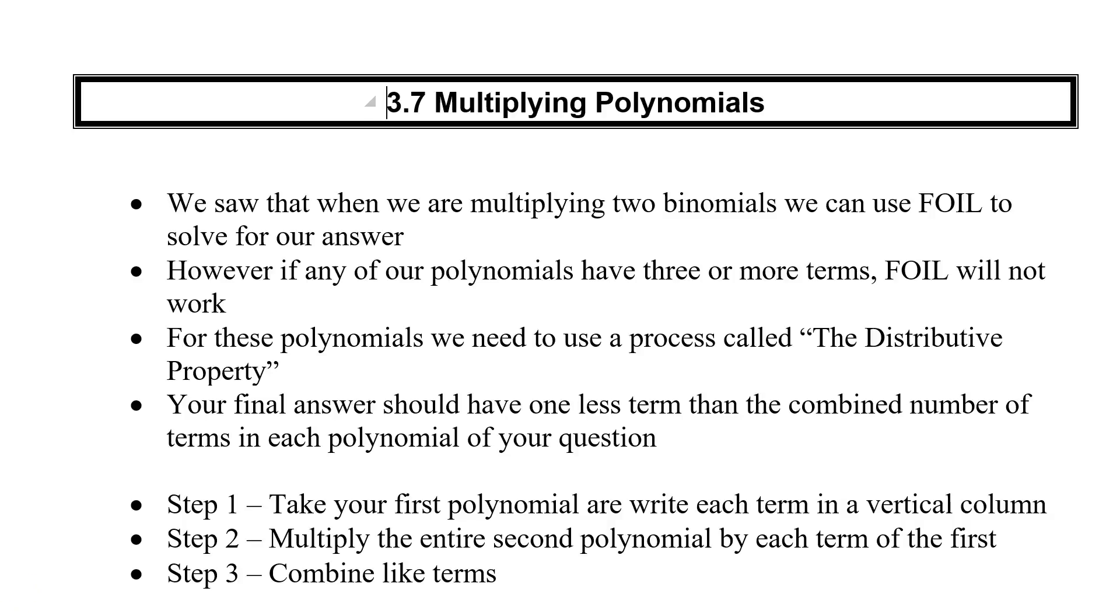And here we have our final video in our Factors and Products unit. We've been looking at factoring trinomials for a while now. We're going to get back to the idea of multiplying polynomials. So we've already looked at how to multiply two binomials. What happens when we have a trinomial, or a monomial, or even possibly a four-term polynomial? We need a few rules in order to do that. So here we have 3.7 multiplying polynomials.